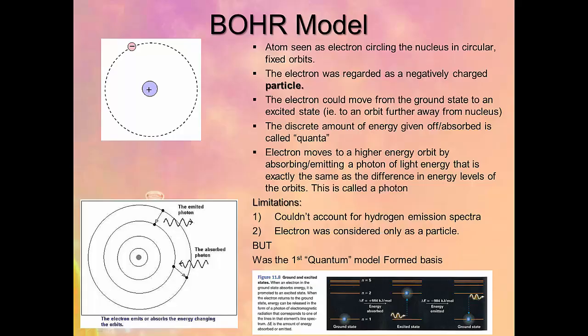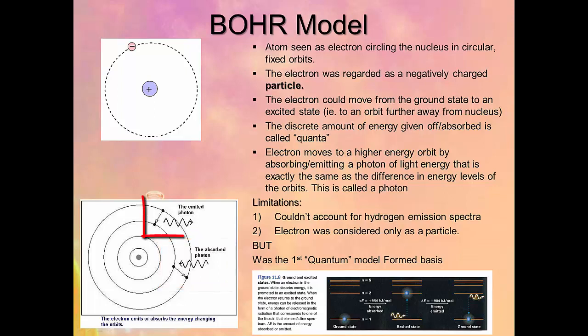In the Bohr model of the atom, the atom is seen as an electron circling the nucleus in circular fixed orbits. The electron was regarded as a negatively charged particle — not a wave. The electron could move from the ground state to an excited state, meaning an orbit further away from the nucleus, and the discrete amount of energy absorbed or emitted is called a quanta of energy. The electron can move to a higher energy orbit by absorbing a photon of light, and when it moves back to a lower energy orbit, it emits a photon of light.